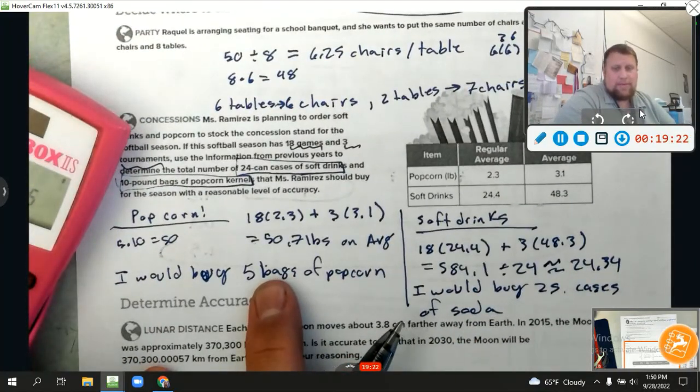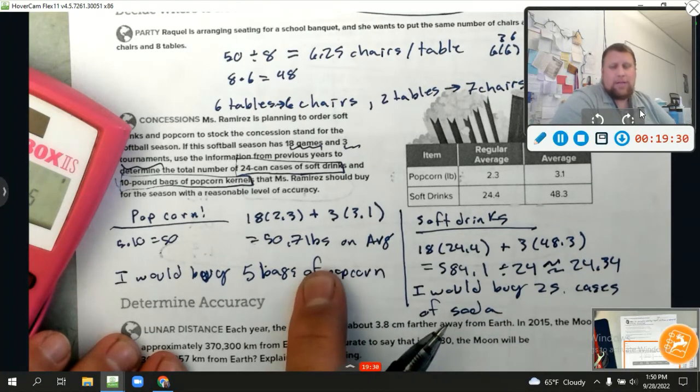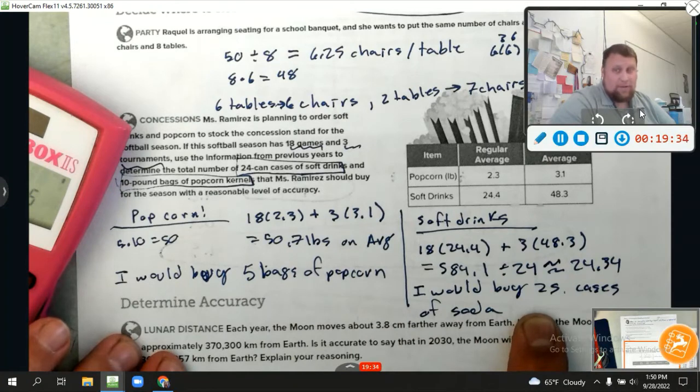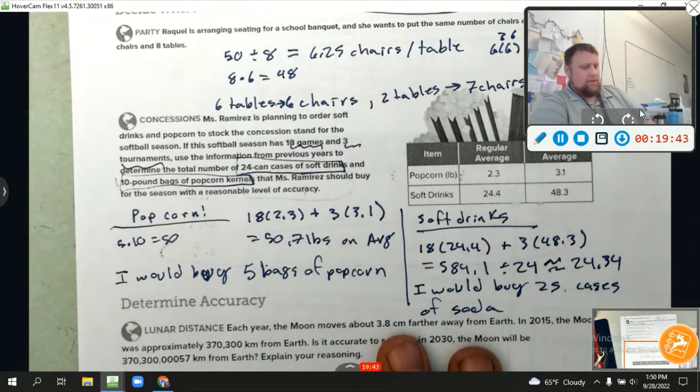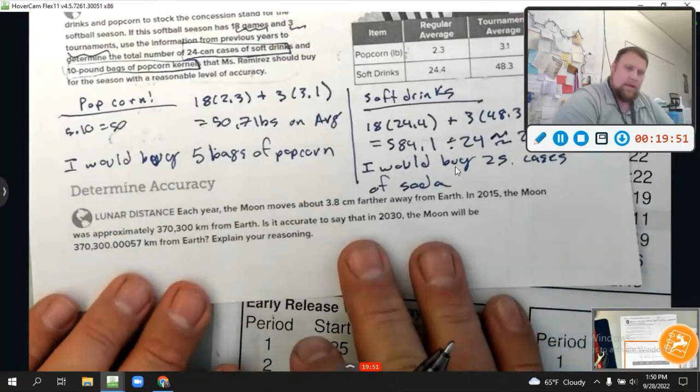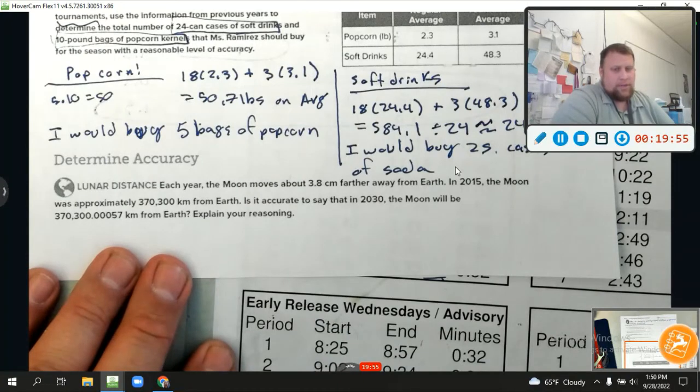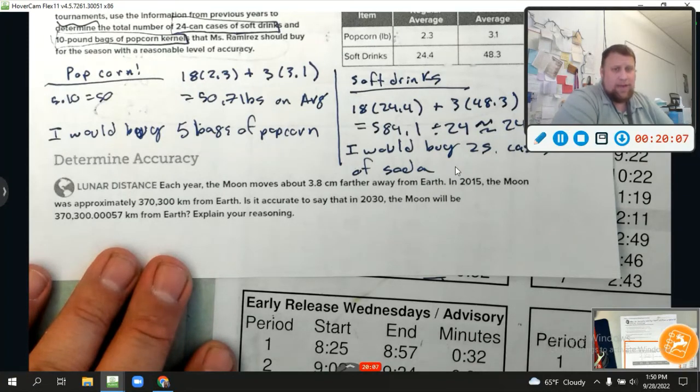It says lunar distance. Each year, the moon moves about 3.8 centimeters. That's about that far a year. Farther away from the Earth. In 2015, the moon was approximately 370,300 kilometers from the Earth. Is it accurate to say that about 2030, the moon will be 370,300.00057 kilometers from the Earth? Explain your reasoning. Do we need that extra little bit? Literally in 15 years, it's moved what? Like an extra foot away? Like we don't need that accuracy. So the answer is no. The moon is still 370,300 kilometers away. We don't need that extra little bit. So accuracy means we're not always accurate to the exact detail because that just doesn't matter. All right, with that said, peace out!